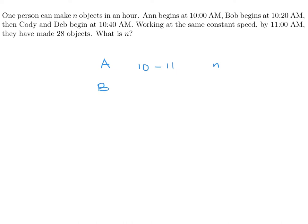Bob starts at 10:20 and they all work until 11. That's only 40 minutes. So that's 40 over 60 minutes times n, which is essentially 2 thirds n. Cody starts at 10:40 and goes until 11, so she's only working 20 minutes. That's 20 over 60 times n, which is essentially 1 third n. And Deb, she is 10:40 to 11 also. That's the same thing, 1 third n.